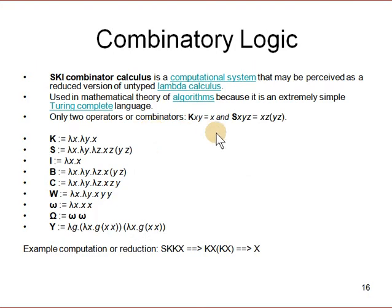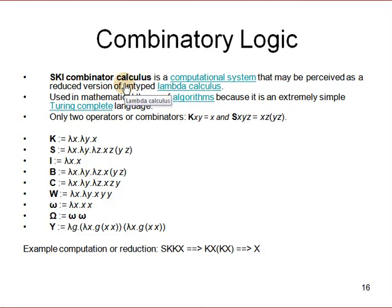There is one more way of doing computation: combinatory logic. If you're interested, you can look up Smullyan's book 'To Mock a Mockingbird,' which is a very good introduction to combinator logic. In combinatory logic you have two combinator functionals, S, K, and I. It is a type of untyped calculus and has the same power as a Turing machine — yet it is much simpler.